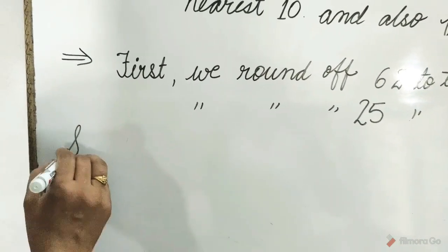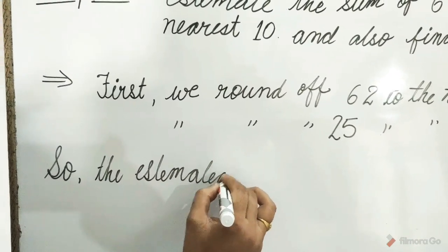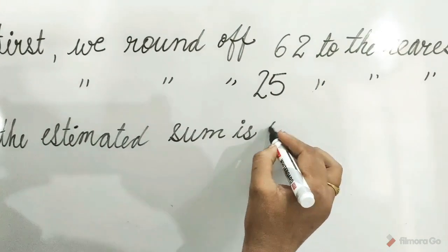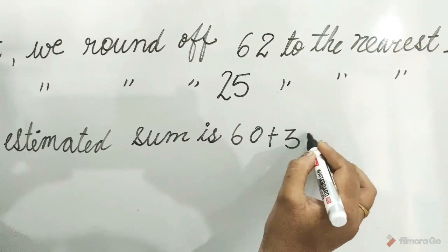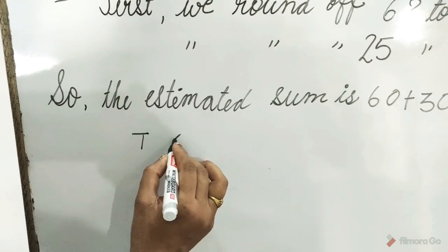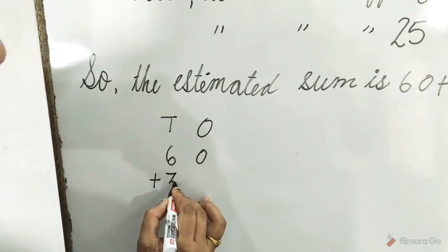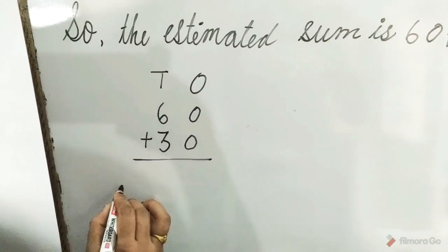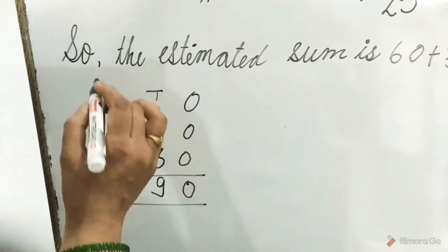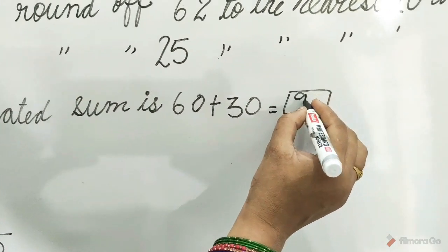So the estimated sum: 60 plus 30 is equal to what? Write T for tens and O for ones: 6 tens 0 ones plus 3 tens 0 ones. 0 plus 0 is equal to 0 and 6 plus 3 is equal to 9. The estimated sum: 60 plus 30 is equal to 90. Write here 90.